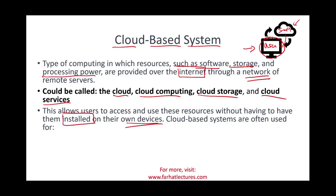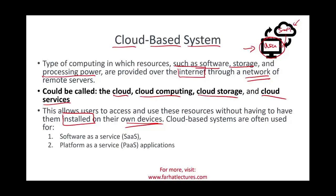For example, you could be using Office 365, but it's not installed — you just have access to it. You could be using Excel, Microsoft Office, and so on. They're not installed; you have access to them. Cloud-based systems are often categorized under three categories: Software as a Service or SaaS, Platform as a Service or PaaS, and Infrastructure as a Service or IaaS.